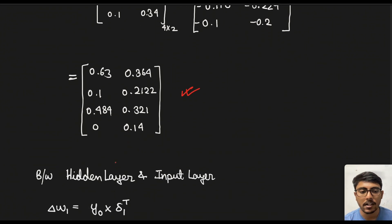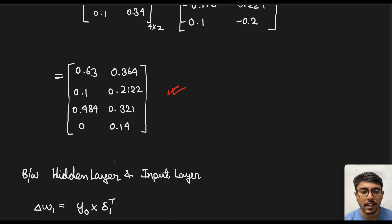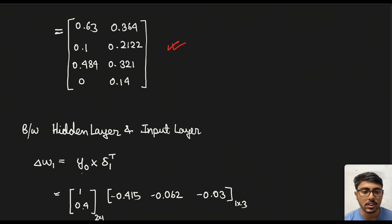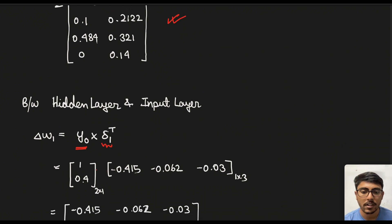Now we will do the same thing for the layer between the hidden layer and the input layer. So the weights between these two layers can be modified using this particular formula which is y0 × δ1 transpose. So you see we take the output from the previous layer. In this case it is basically the input given to the neural network. In the previous case it was y1 and the delta associated with this particular hidden layer.